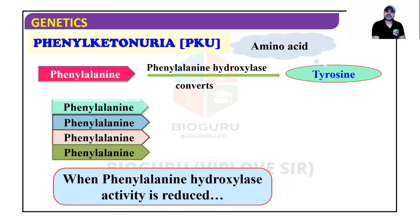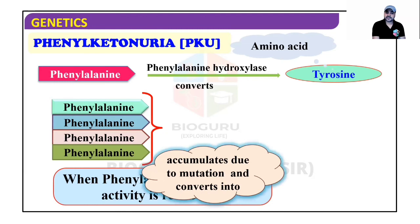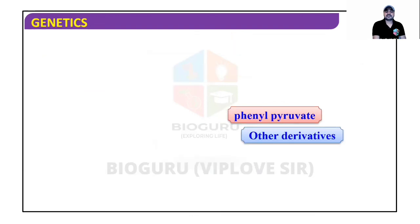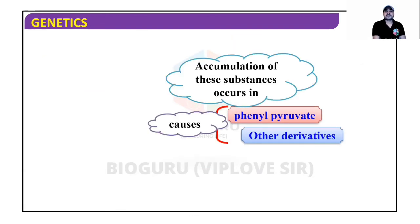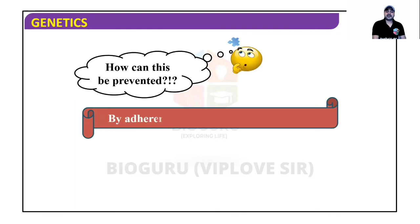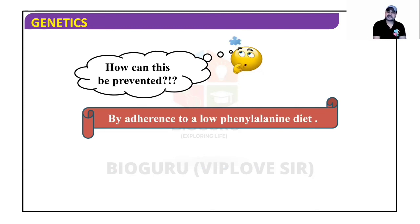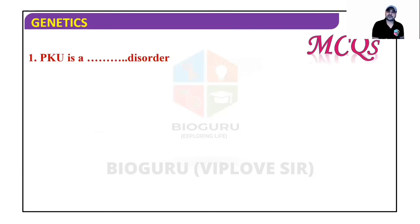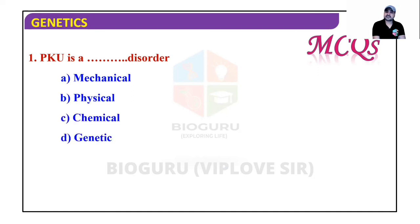When phenylalanine hydroxylase is deficient, phenylalanine and its derivatives accumulate due to the mutation, and convert into phenylpyruvate and other derivatives. Accumulation of these substances causes mental retardation. Prevention involves following a low-phenylalanine diet, which reduces phenylalanine formation in the body, preventing derivative buildup. PKU is a genetic disorder.